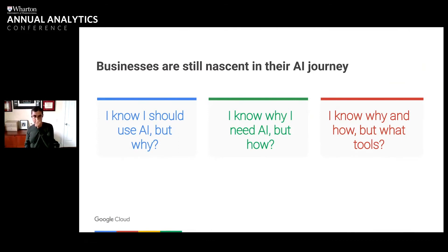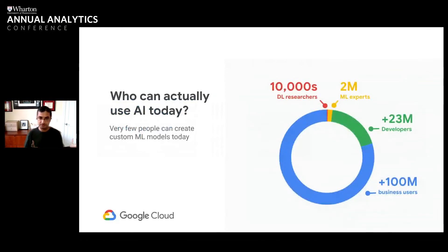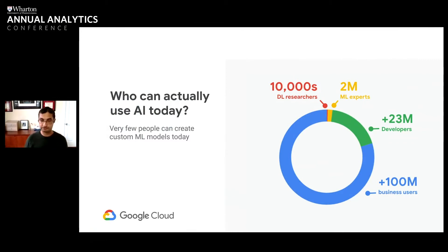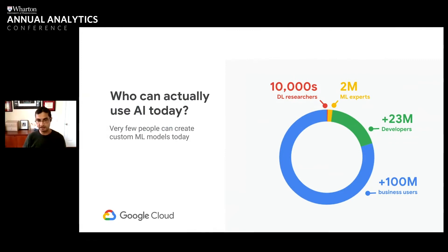Looking at who can actually use AI today — right now there are probably only about tens of thousands of deep learning researchers that can go and build a unique deep learning model. There are probably about 2 million or more data scientists and machine learning experts, but there are over 23 million developers and over 100 million business users. Part of what we need to do to make AI truly transformative is move from those 10,000 researchers to that entire circle being able to use AI — just like in the early Internet era, going from developers building CGI scripts to every small business being able to build a website.